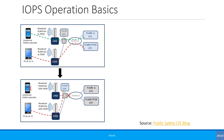There are also separate core networks. In normal conditions, commercial and public safety subscribers are attached to their own centralized core networks and all data connectivity and communication services are provided by those centralized core networks. The lower part of the figure depicts a transmission failure in backhaul. In that case, eNodeBs can activate IOPS mode and offer local services; however, IOPS services are available only to public safety UEs that have a subscription for IOPS mode. Commercial UEs will get disconnected at this point.